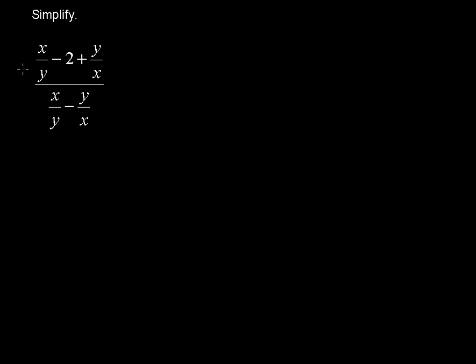Simplify x over y minus 2 plus y over x, all over x over y minus y over x. This is called a complex fraction, or sometimes called a compound fraction, because it's got fractions within a larger fraction.